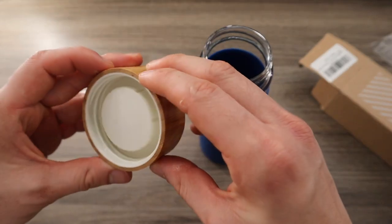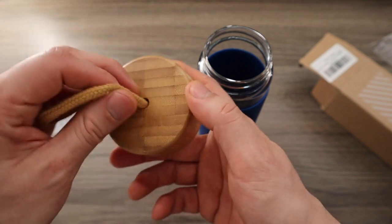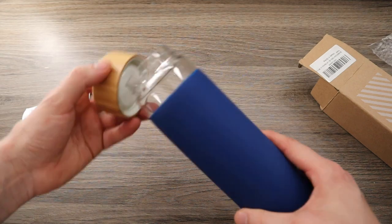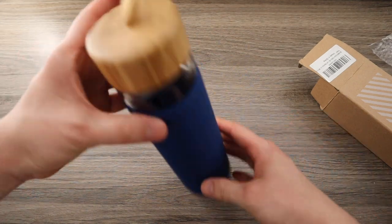The silicone sleeve encases the base of the glass bottle, shielding it from breaking. In any mishap, if the silicone ring sticks to the top of the cup, it would be ideal if you soak it in warm water for some time.